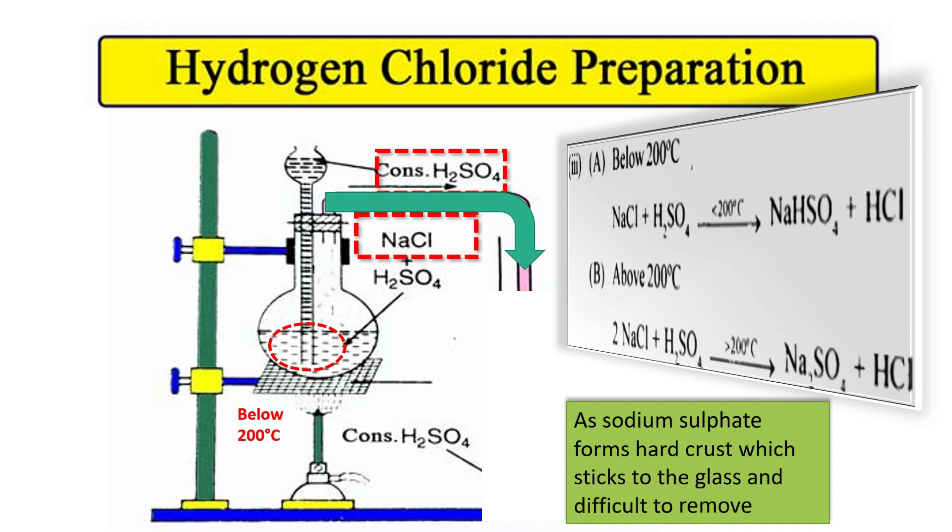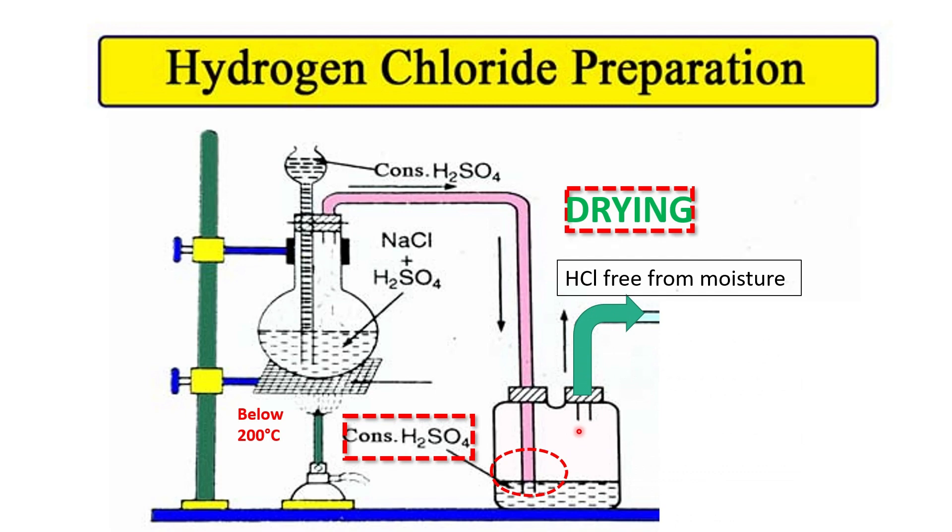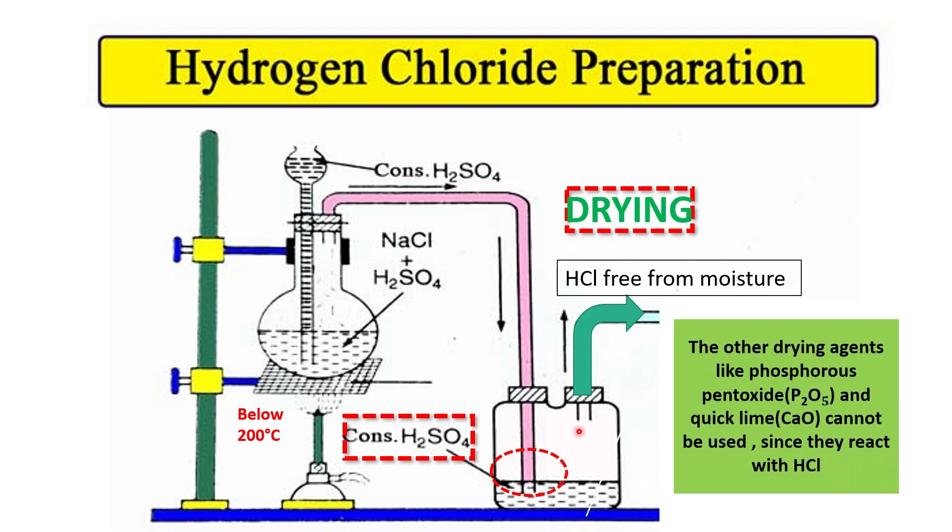The next part is drying. Here we want to dry the HCl which is coming out of this delivery tube using a drying agent, concentrated sulfuric acid. Again, the precaution should be taken that this delivery tube should be dipped inside the concentrated sulfuric acid. Whatever HCl comes out of the delivery tube will be free from moisture. The point to be noted here is that other drying agents like phosphorus pentoxide and quick lime cannot be used since they react with HCl.